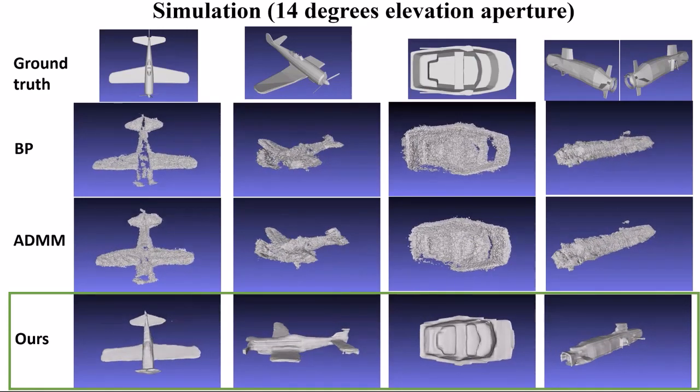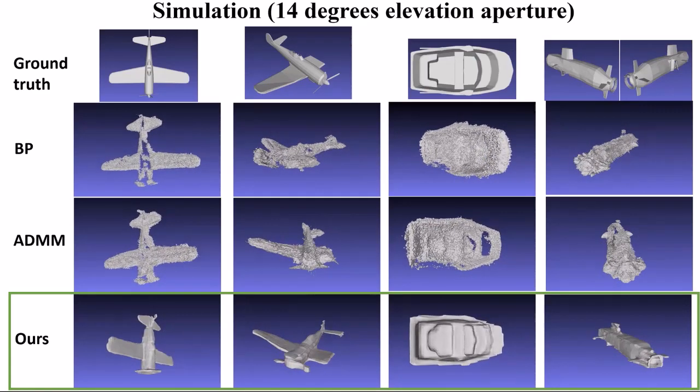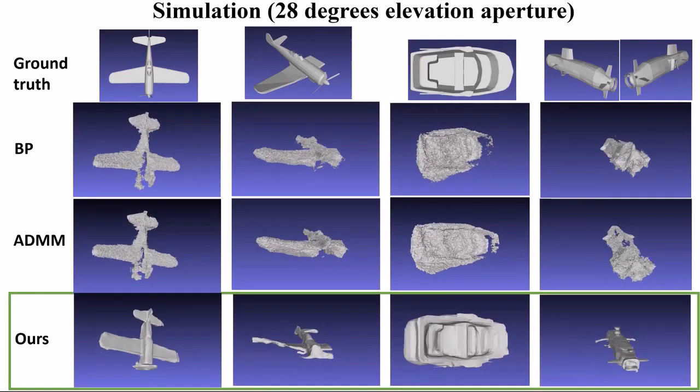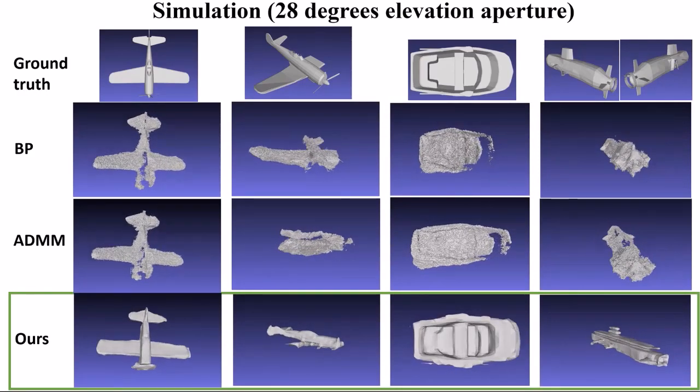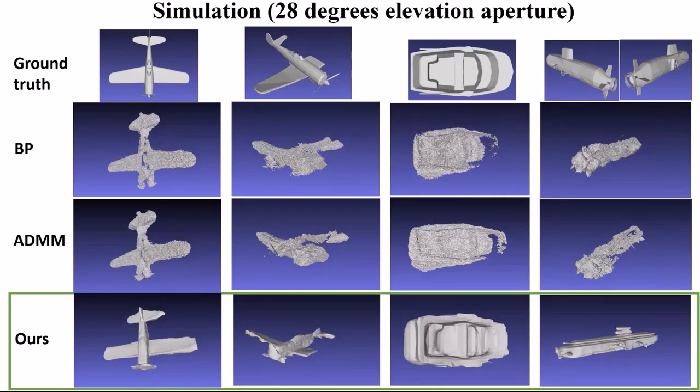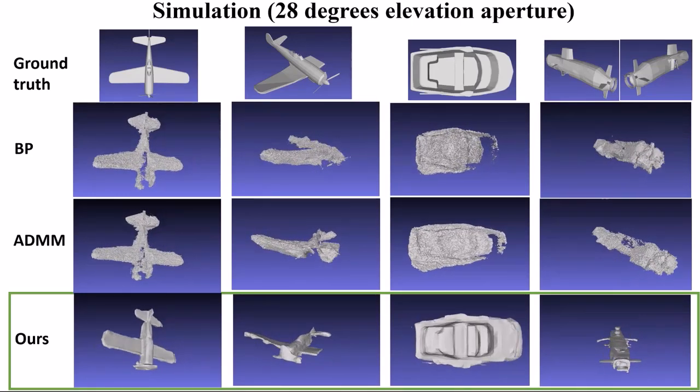This slide shows example reconstructions with a 14 degree aperture. This slide shows reconstructions using a 28 degree elevation aperture. Our algorithm produces more accurate reconstructions in terms of accuracy and mesh coverage for both apertures.